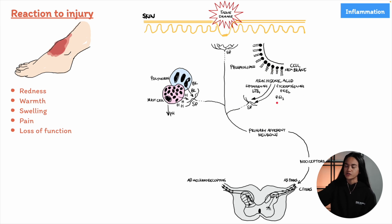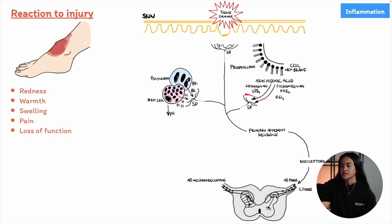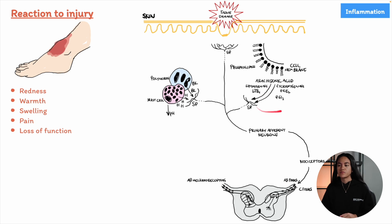This includes eicosanoids like prostaglandins and leukotrienes, which are produced in response to tissue damage. These metabolites are responsible for many of the classic signs of inflammation like redness, pain, and swelling. It's important to remember that arachidonic acid metabolites are just one part of the picture — other mediators like histamine and substance P also play a role, and these different substances often interact with each other.